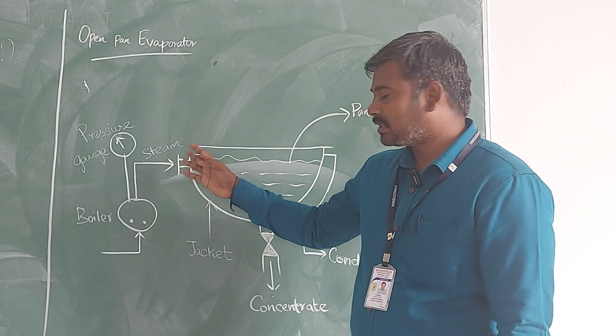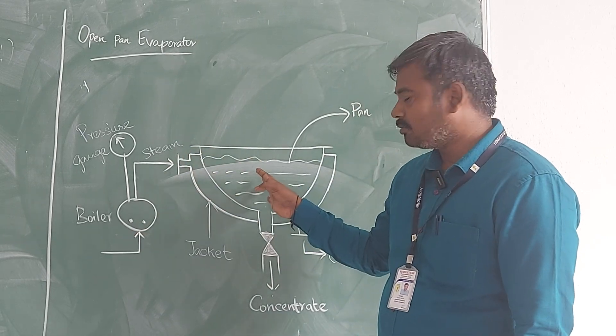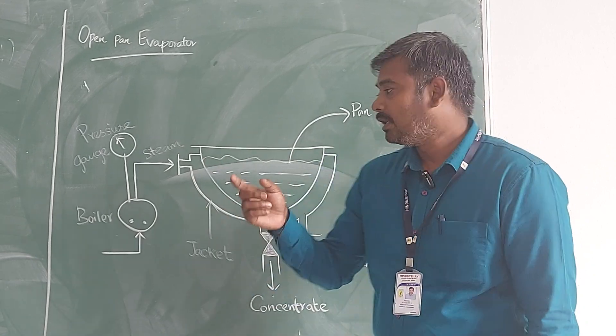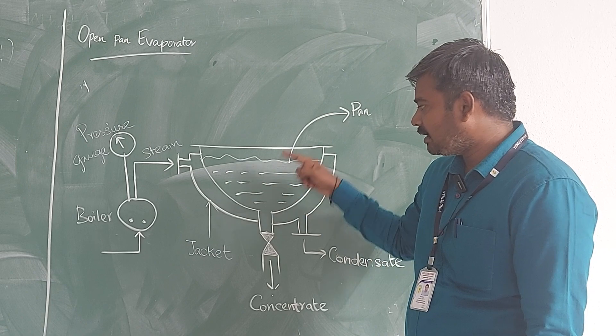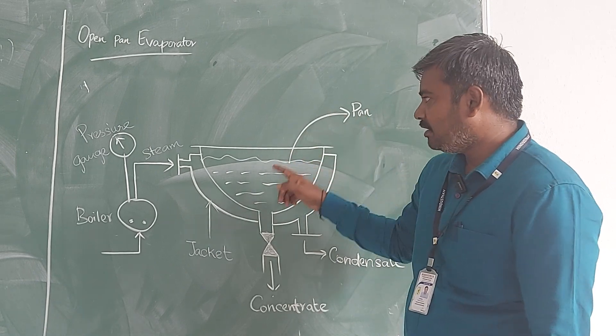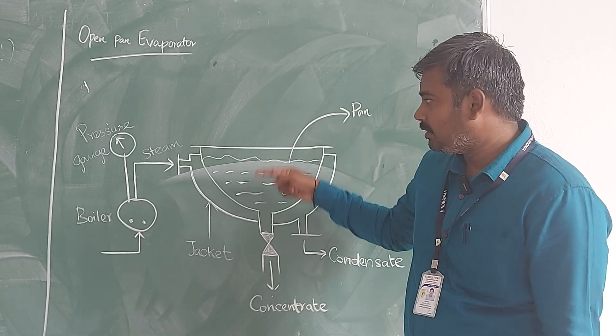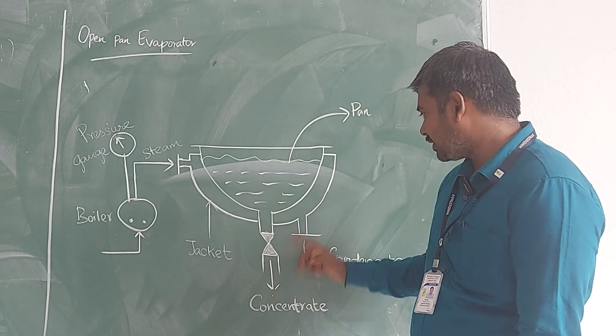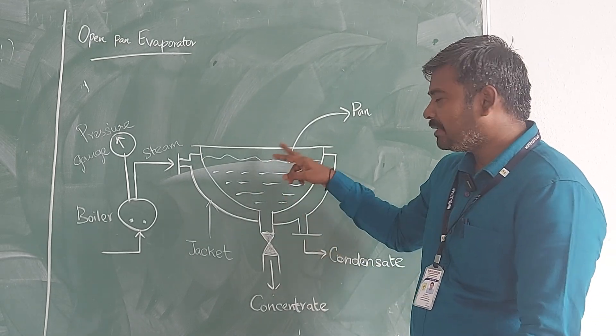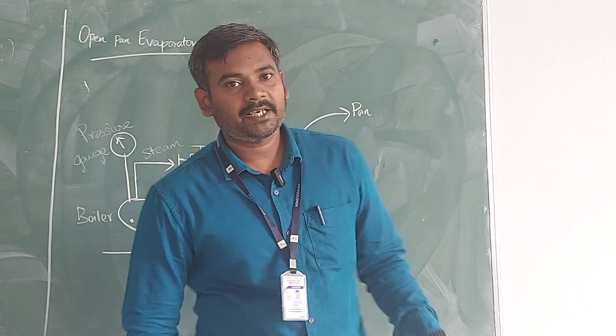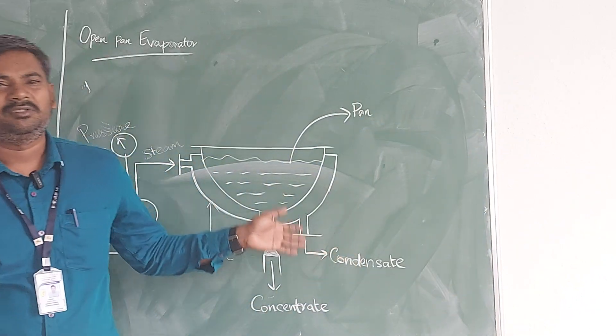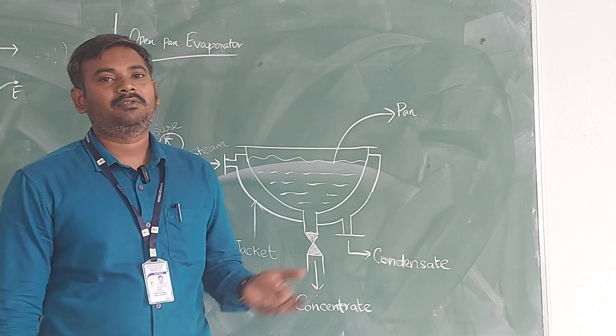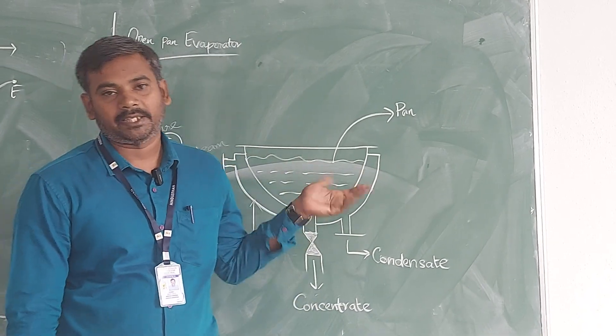What the steam does? It will be giving to the evaporator which consists of a solution, solvent plus solute, and all the solvent will get evaporated and we will be having only solute which is going to become a thick solute and it will be collected from the bottom of the tank. The remaining condensate will be taken from the side of the tank. This is a very simple diagram and a very simple mechanism of the open pan evaporator. Thank you.